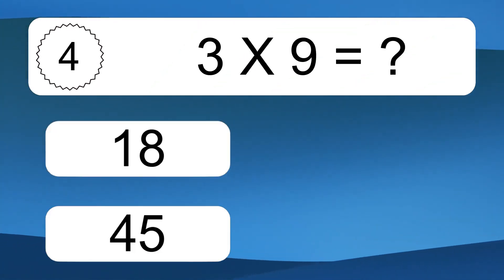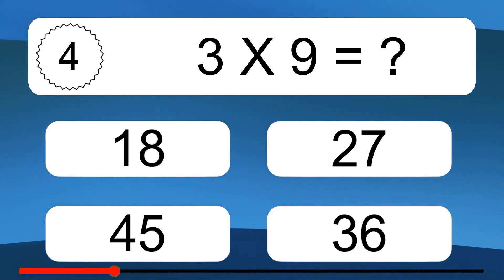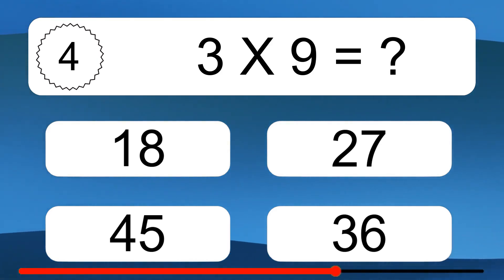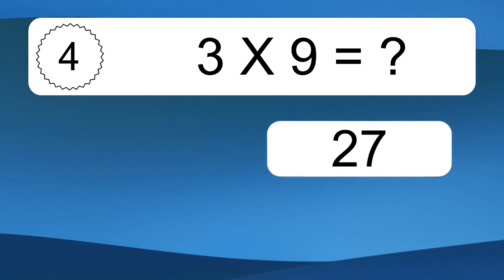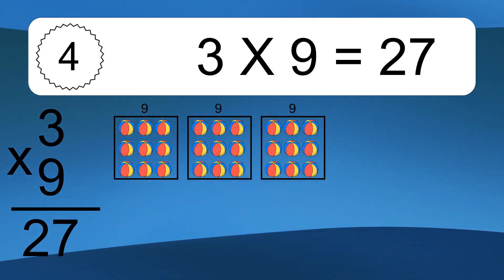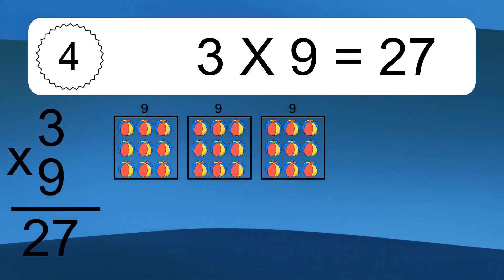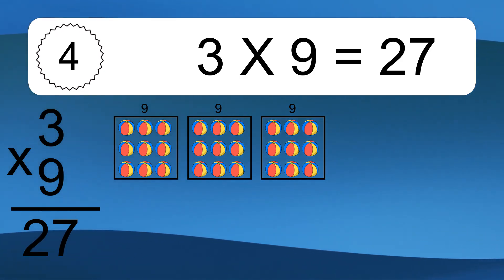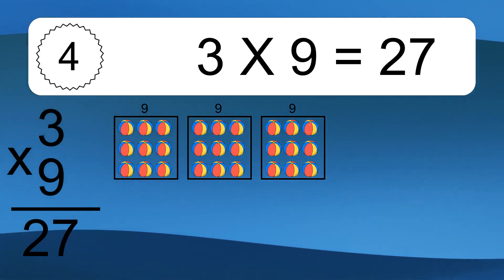Three times nine equals what? Three times nine equals twenty-seven. We have three boxes, and each box has nine colorful balls inside. If you count all the balls in all the boxes together, you will have three times nine balls. This equals twenty-seven balls.